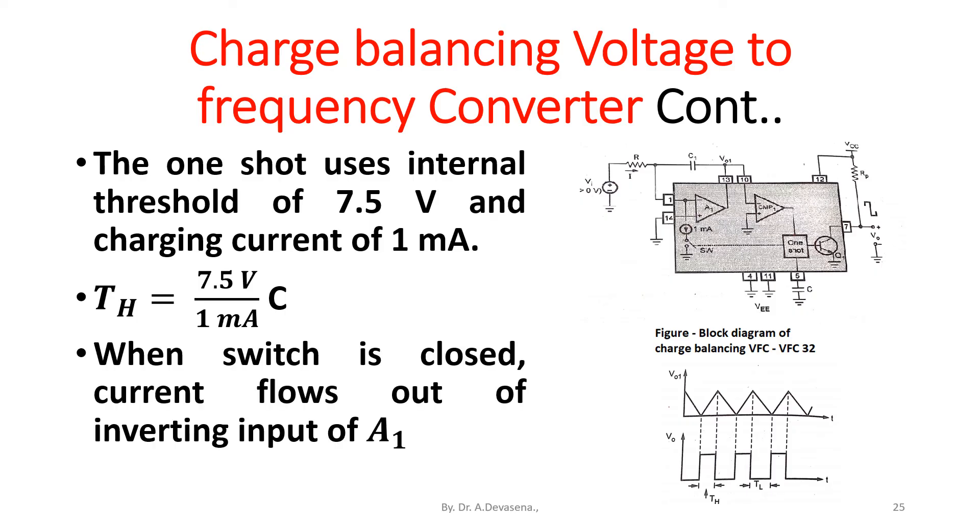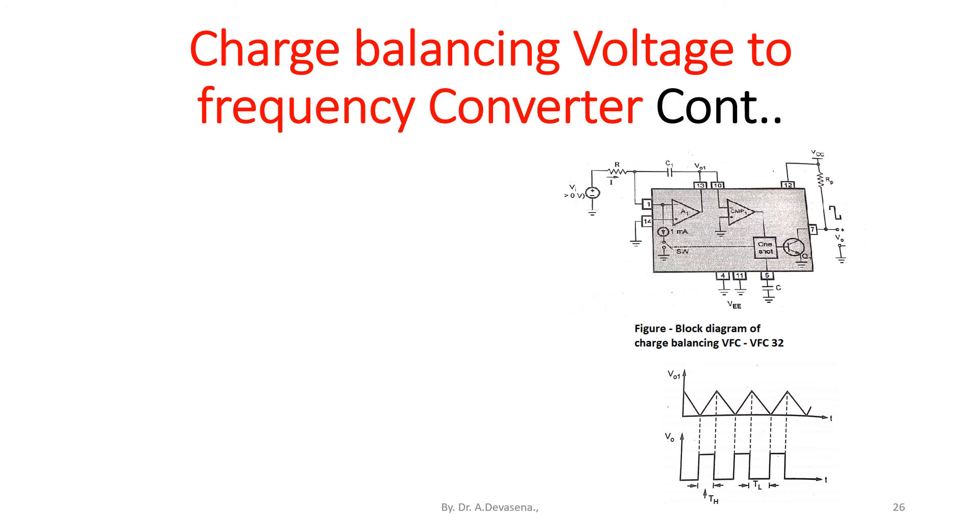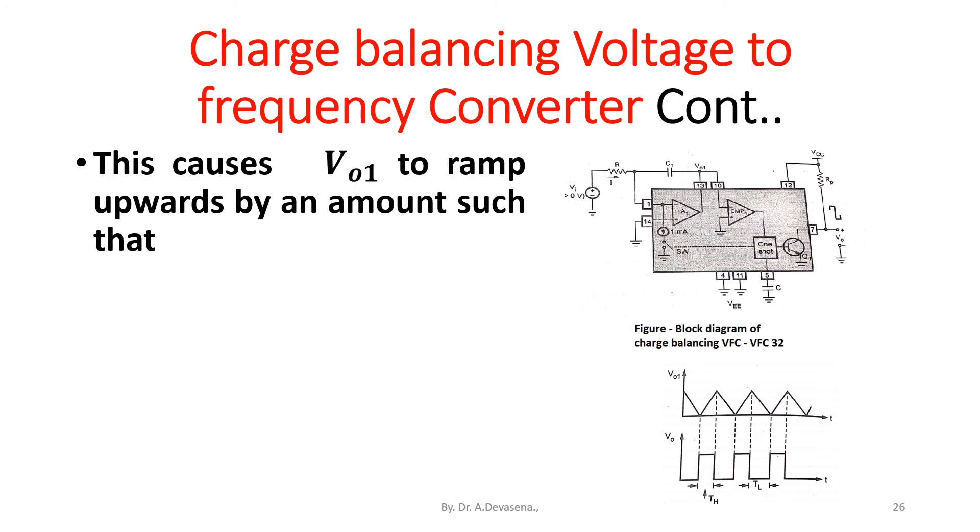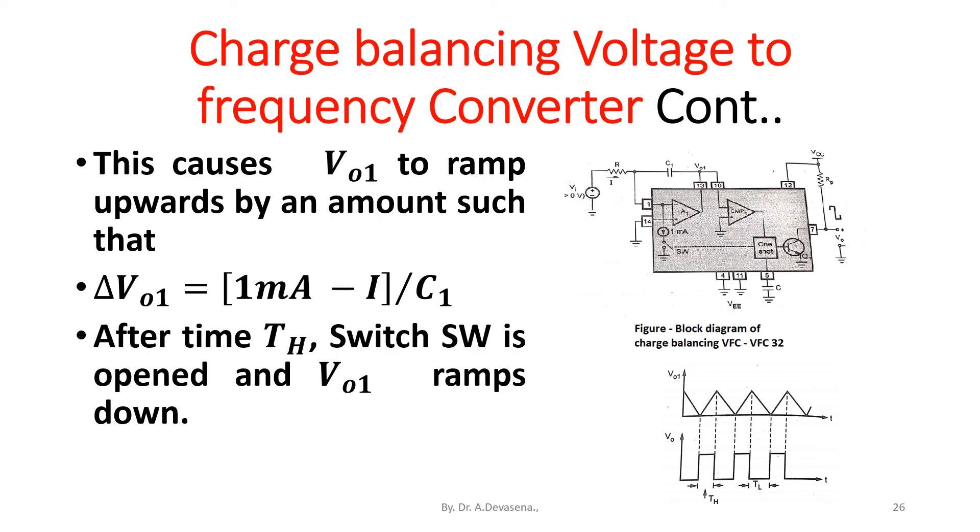When switch is closed, current flows out of inverting input of A1. This causes V_o1 to ramp upwards by an amount such that delta V_o1 equals 1 milliamp minus I divided by C1. After time T_H the switch SW is opened and V_o1 ramps down.